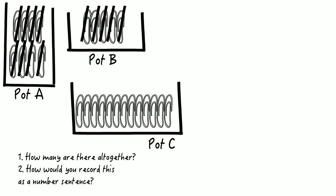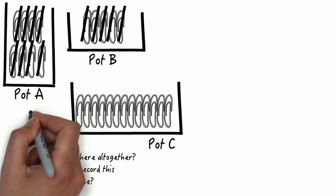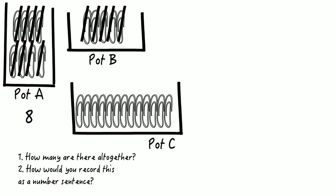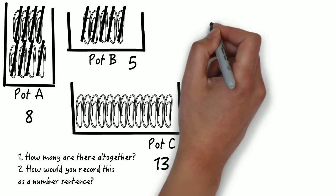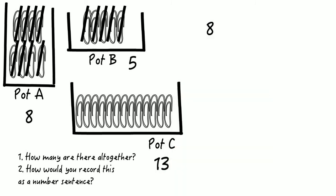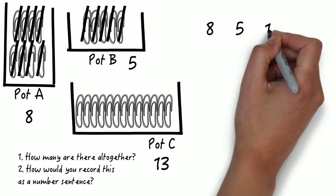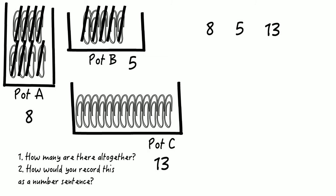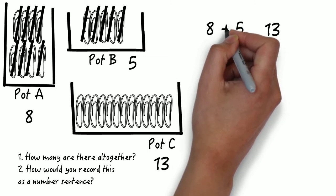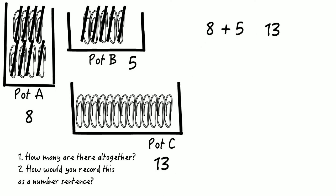And what would this look like as a number sentence? Well, we had eight paperclips in pot A, five paperclips in pot B, and all together we had thirteen in pot C. So we need eight, five, and thirteen. We would put an addition sign between the two quantities we have added together, eight and five, and an equals sign before the last number to show the total.